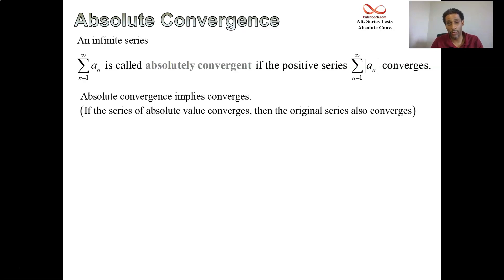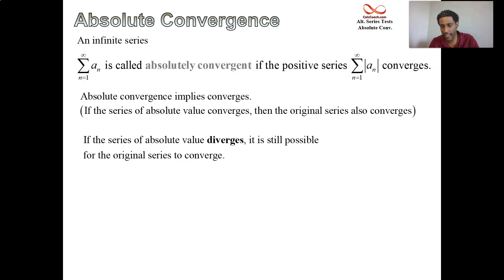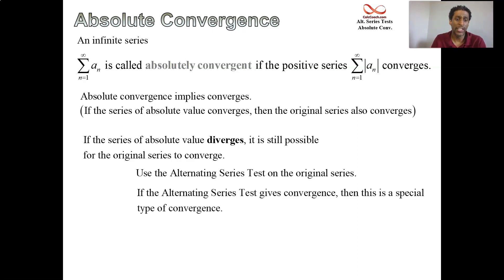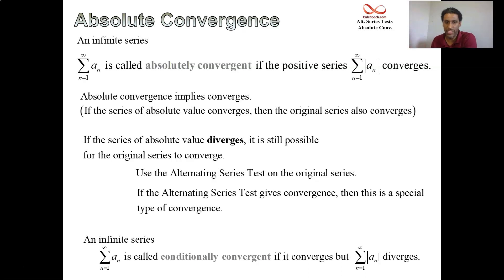If the series of absolute values diverges, you could still recover convergence on the original series — it's a weaker type of convergence. If you go back and look at the alternating series test on the original series and you see that it converges while the series with the absolute value bars thrown in diverges, what that's called is conditional convergence.